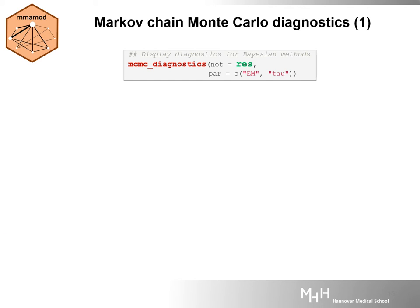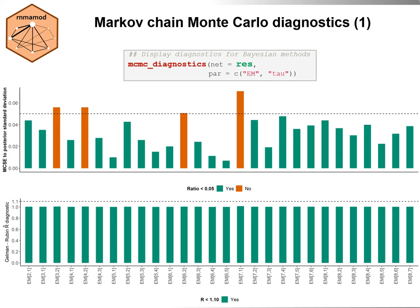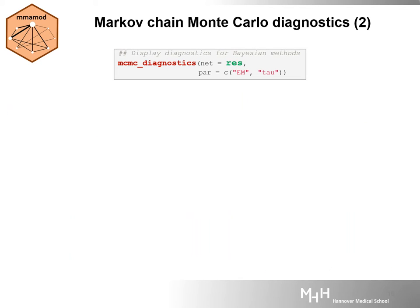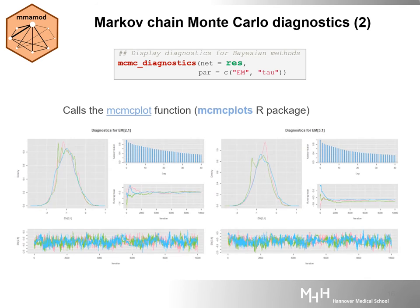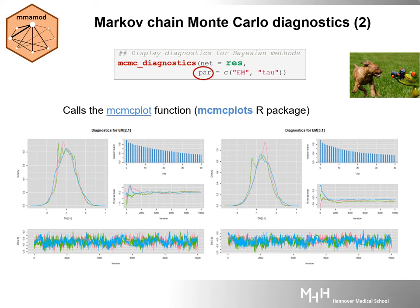Use the MCMC_diagnostics function to check the model's convergence. This function returns several panels of bar plots for the parameters of the model. Here we illustrate only for the log odds ratio of all possible comparisons in the network. MCMC_diagnostics also calls the MCMC plot function of the MCMCplots R package, which returns an HTML file with several diagnostic plots for the monitored parameters specified in the par argument — namely, the log odds ratio of all possible comparisons, EM, and the common between-trial standard deviation.